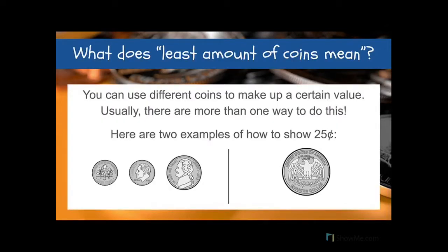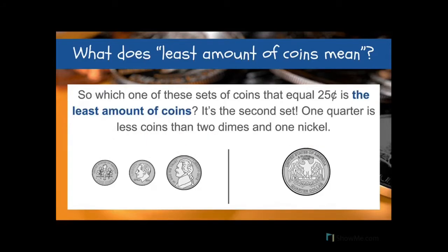What does least amount of coins mean? Well that's a really good question. You can use different coins to make up certain values and usually there are more than one way to do this. So here are two examples of how to show 25 cents. We have two dimes and a nickel, and we have a quarter. The running total for the dimes and nickel is 10, 20, 25. And the quarter is just 25. So which set of coins that equals 25 cents is the least amount of coins? That's right — it's the second one. One quarter is less than two dimes and one nickel, or three coins total.